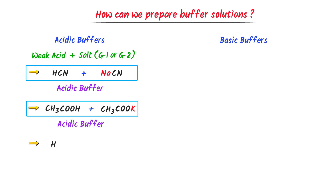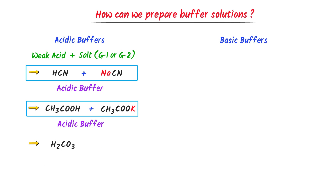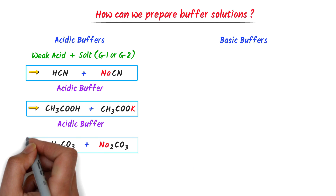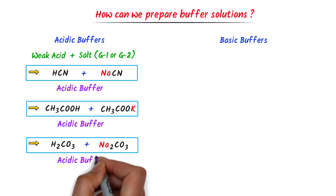Thirdly, consider carbonic acid. We know that carbonic acid is a weak acid. Now I remove hydrogen from carbonic acid and instead of hydrogen I replace it by sodium. So I get sodium carbonate. A mixture of carbonic acid plus sodium carbonate forms an acidic buffer solution.